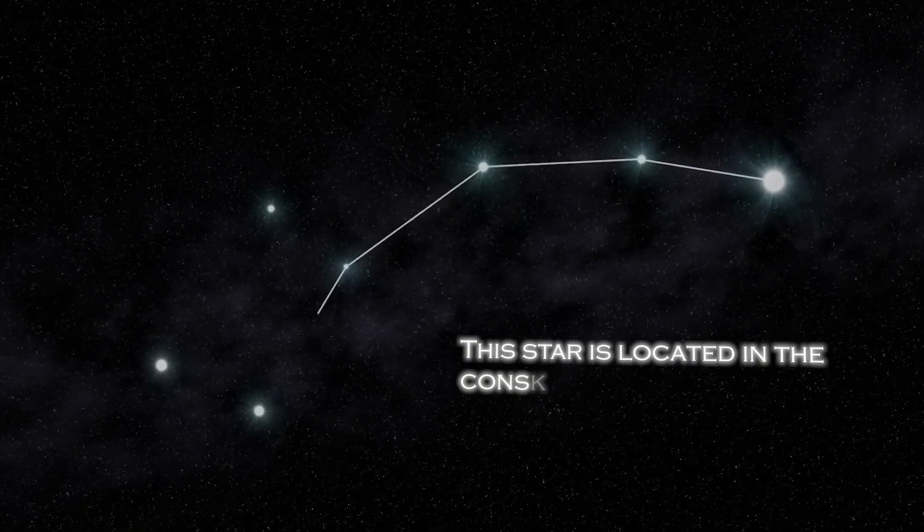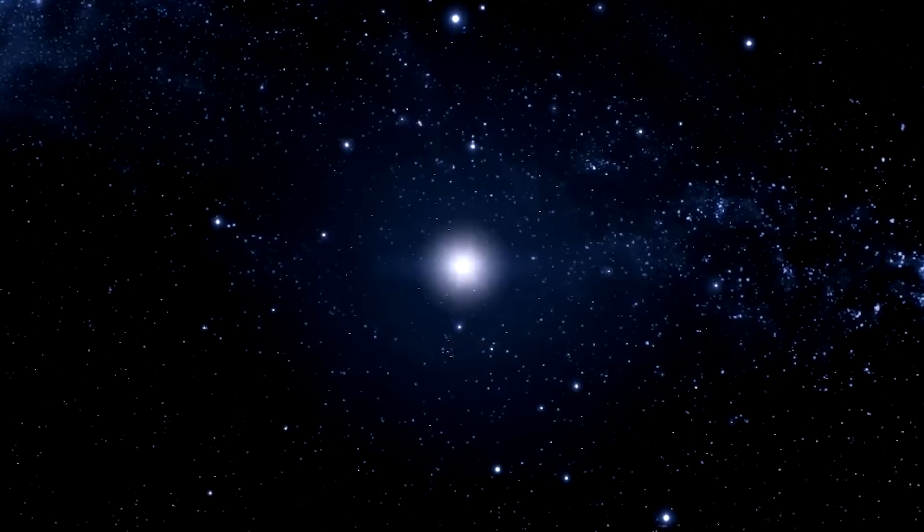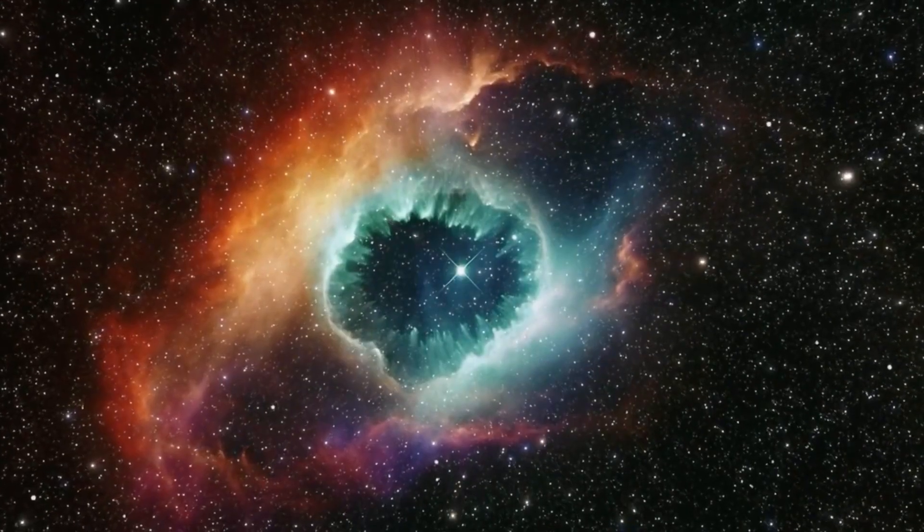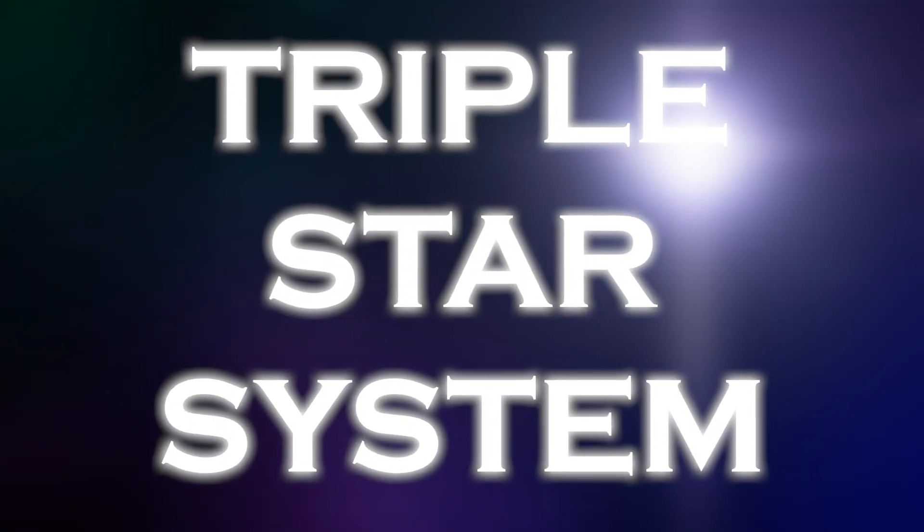The star is located in the constellation Ursa Minor. Polaris is a star of moderate brightness that stands out as a yellow-white supergiant of considerable dimension compared to our Sun. Despite its appearance as a lone star, it is actually part of a rather complex triple star system.